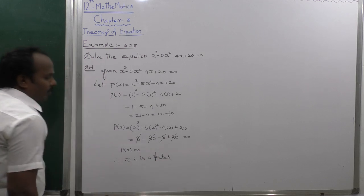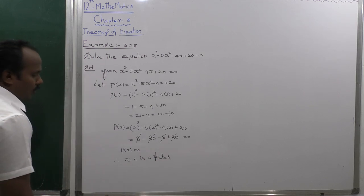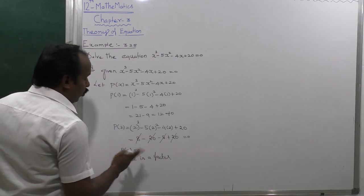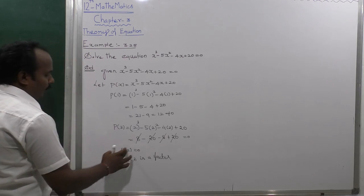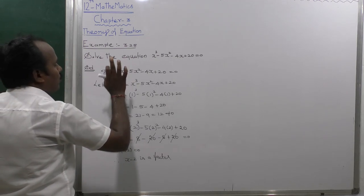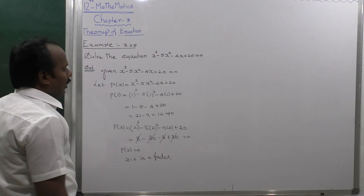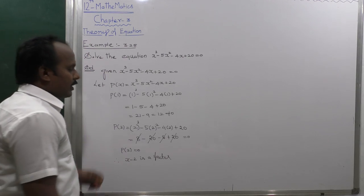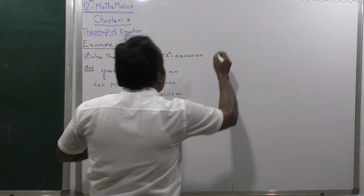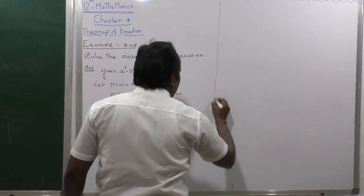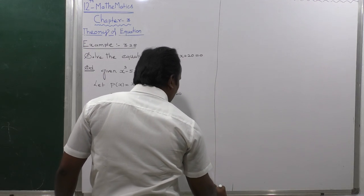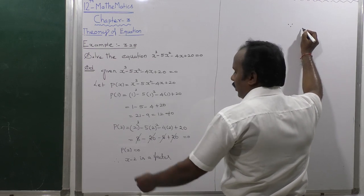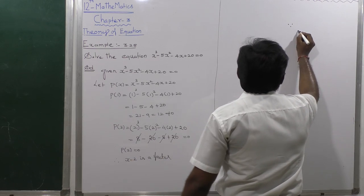Since x minus 2 is one factor, and this is a degree 3 polynomial, there are three factors total. To find the other two factors, we use synthetic division.